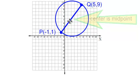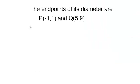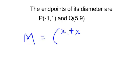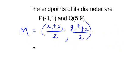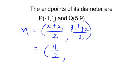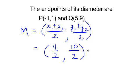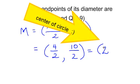In order to get the center, it is the midpoint of those two points. So I need to use my midpoint formula. The midpoint is x₁ plus x₂ divided by 2, comma, y₁ plus y₂ divided by 2. So the midpoint will be negative 1 plus 5, which is 4 over 2, and the y's: 1 plus 9, which is 10 over 2. So I have my center of my circle — it will be 2, 5.